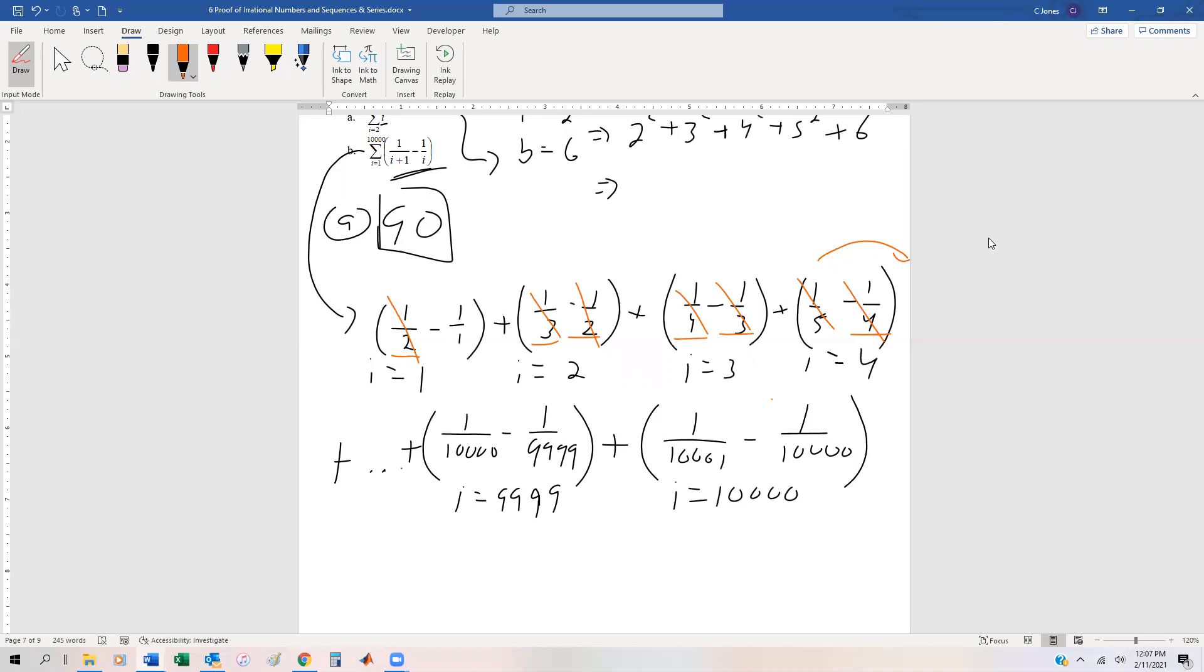Notice towards the end here, we would have a negative one over 10,000 and a one over 10,000. And this one over 9,999 would cancel out with a positive one over 9,999 from the previous term. So what does that leave us with? That leaves us with negative one plus one over 10,001. And if we got a common denominator and added those, that would be negative 10,000 over 10,001.